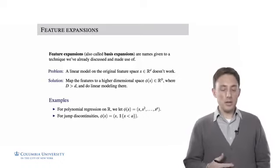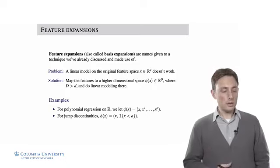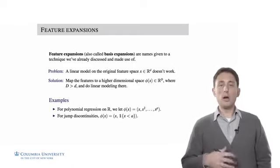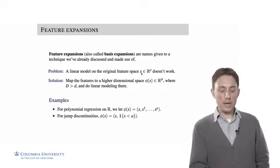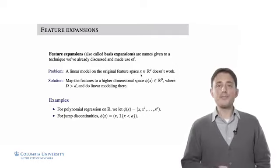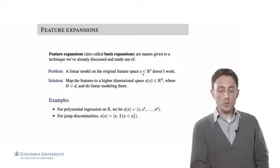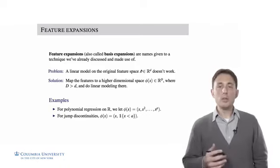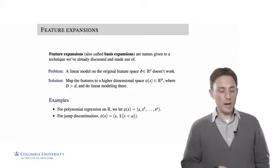A feature expansion, also called a basis expansion, is something we've done before in this course without talking too much about it. The idea or the motivation is where a linear model in the original feature space doesn't work for some reason. So if our data is in R^d and we want to do either a linear regression model or a linear classifier, doing a linear model in R^d is not going to work because of the way that the data is structured. The solution is to take each data point and map it to a higher dimension and then do a linear model in that higher dimension.